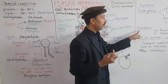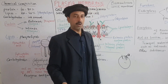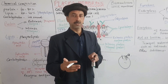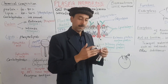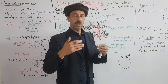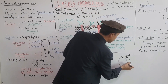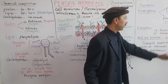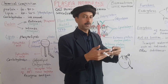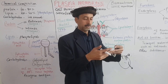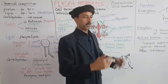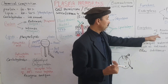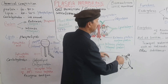Exocytosis is when materials are released from the cell to the outside. For example, neurons release neurotransmitters at junctions through exocytosis. Similarly, special glands such as the pituitary gland and thyroid gland produce hormones that are released from the cell via exocytosis.